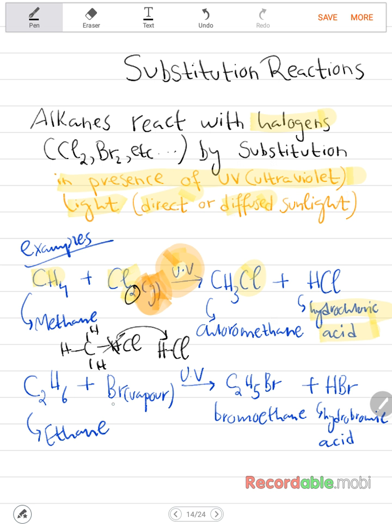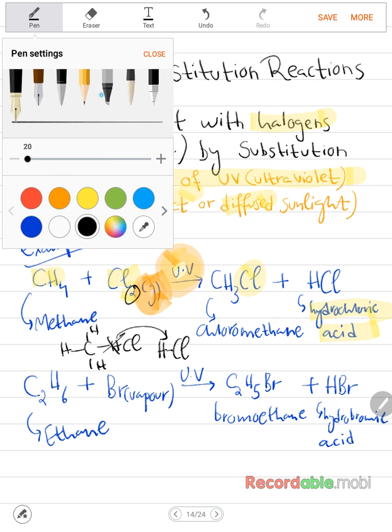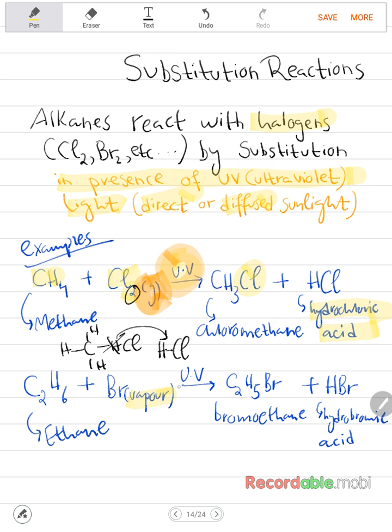Another example is ethane with bromine. Again, the bromine has to be in vapor state, not aqueous. Let me get the highlighter again. It has to be in vapor state and in the presence of UV light. Gives you bromoethane. And the hydrogen atom which has been replaced by bromine atom bonds with the second bromine atom to give hydrobromic acid. So it's almost the same, just similar, different in terms of this is chlorine and this is bromine.